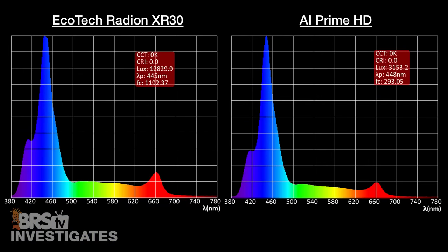The AI Prime has just a bit more focus on that 460 to 470 range and a little less on the 400 to 430 range. Overall just a small shift to the right.